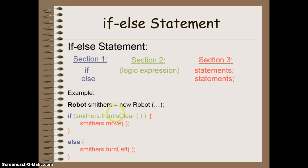We can also take a look at an if-else statement. So in this case, if something is true, run these statements. However, if that original statement is not true, I want to run a separate set of statements. So in this case, again, going back to that front is clear, if there's nothing in front of me, then I want Smithers to move forward. Otherwise, if there's something in front of Smithers, I want him to turn left.